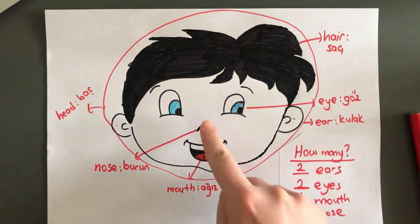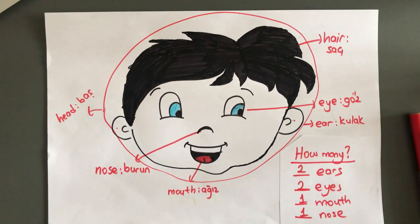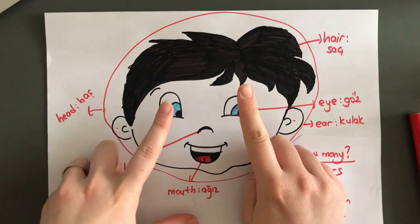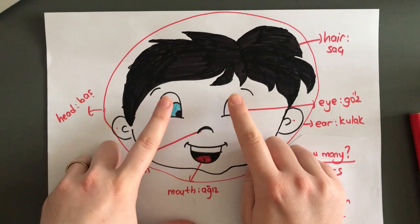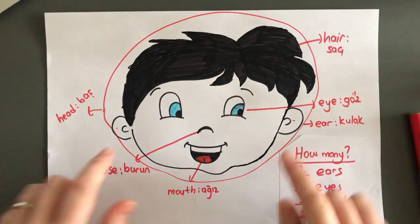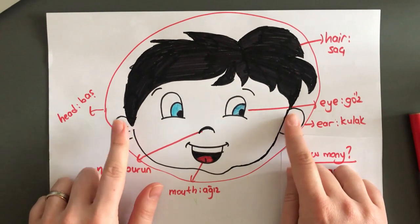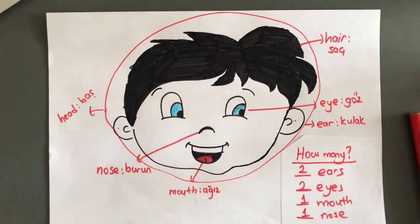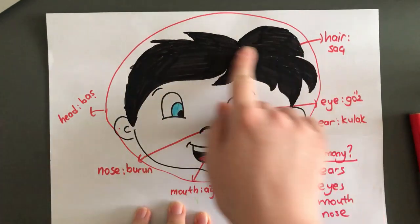I can touch my nose. Ben burnuma dokunabilirim. I can touch my eyes. Gözlerime dokunabilirim. I can touch my ears. Kulaklarıma dokunabilirim. I can touch my hair. Saçıma dokunabilirim.